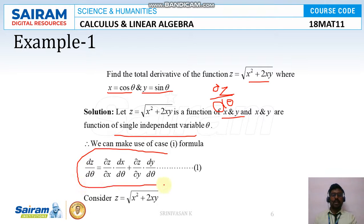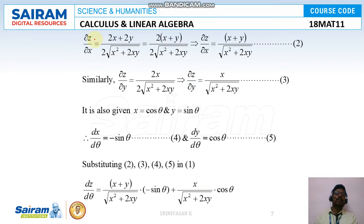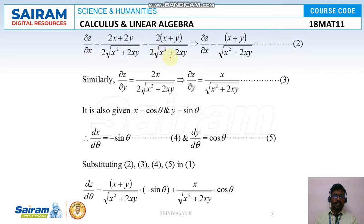So, dz/dθ = (∂z/∂x)(dx/dθ) + (∂z/∂y)(dy/dθ). Now, differentiating z = √(x² + 2xy) with respect to x, we get ∂z/∂x = (2x + 2y) / (2√(x² + 2xy)). Taking 2 outside and canceling, we get ∂z/∂x = (x + y) / √(x² + 2xy).